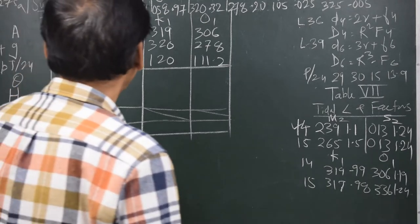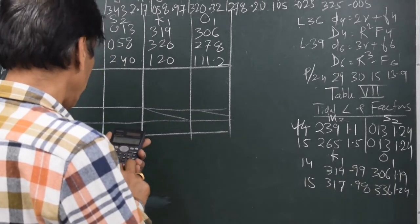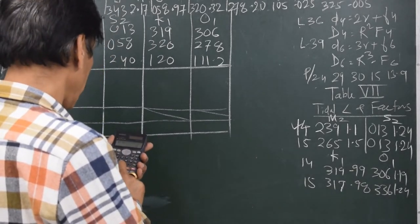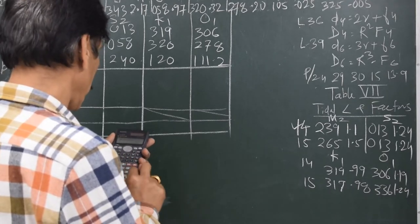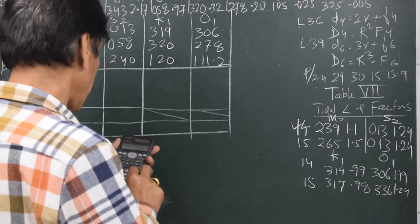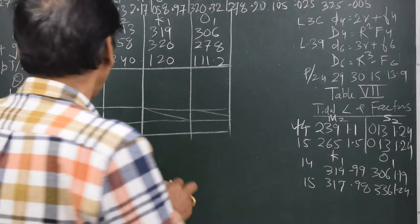I get 191. The calculation is 013 plus 058 minus 240, which gives minus 169. So I add 360 to get 191.